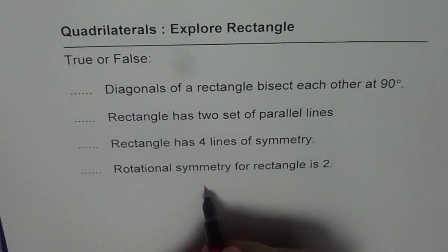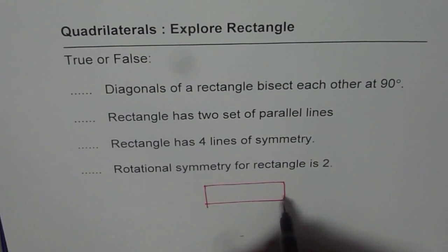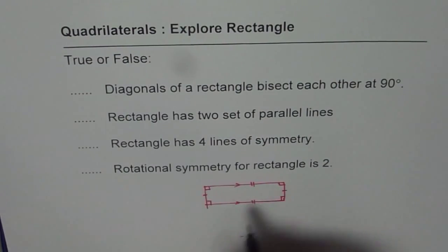As you know, rectangle has four sides. It is a quadrilateral and the angles are 90 degrees, each angle is 90 degrees. Opposite sides are parallel and are also equal. So that is how a rectangle is.